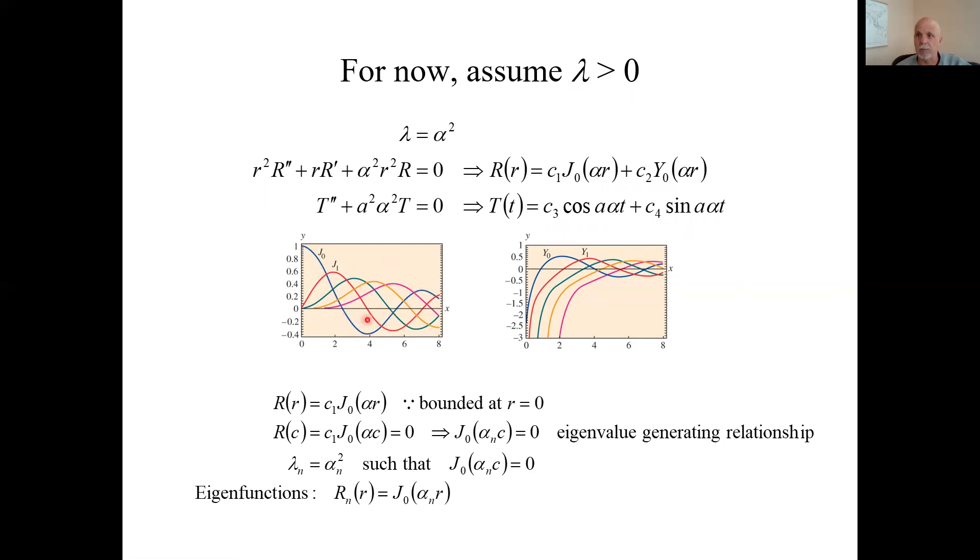This blue line here is bounded. The Bessel function of the second kind goes unbounded as R approaches zero. And R equals zero is the center of our drum. That's where it has to be. It has to be bounded over the range of our variables. R goes from zero to C. But it has to be bounded at zero. So we reject these functions. Meaning we'll set this little C to zero. And our R functions are just these Bessel functions of order zero, the first kind. Bessel functions of the first kind of order zero.